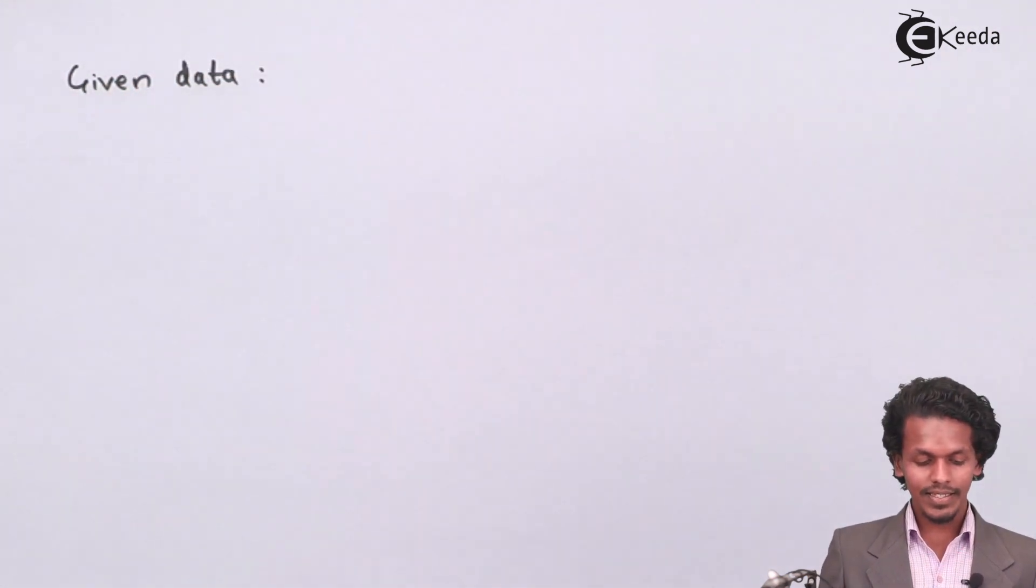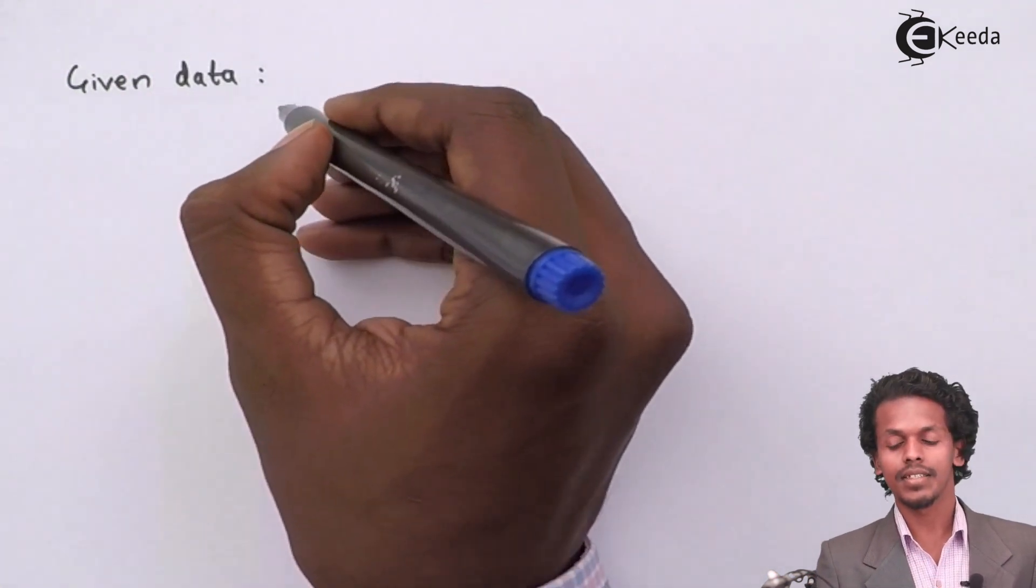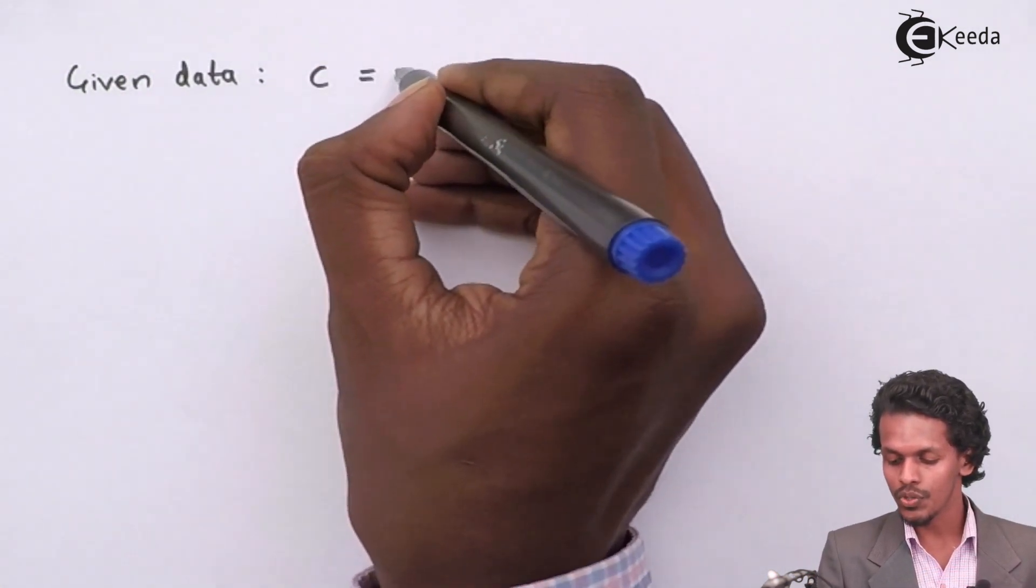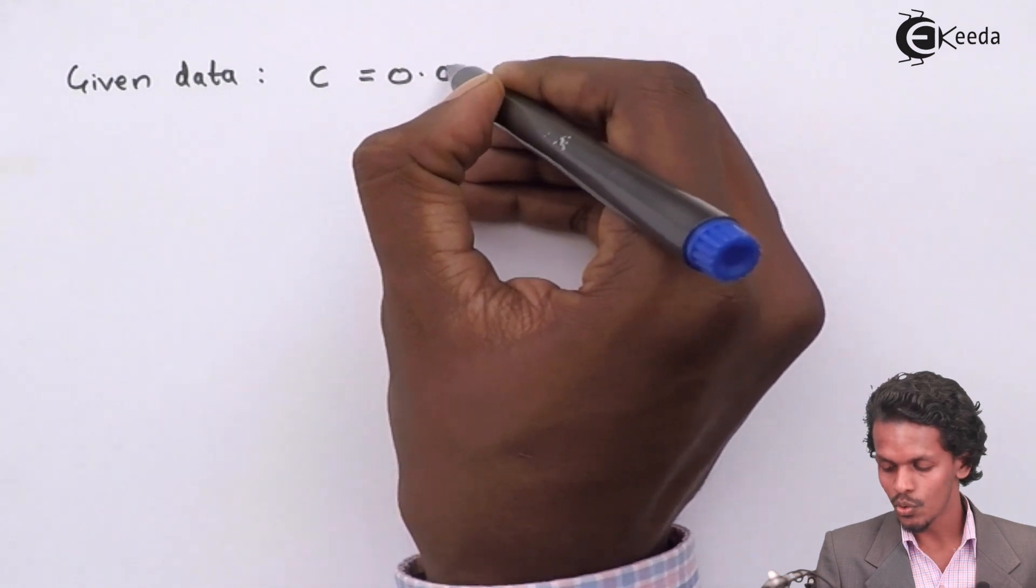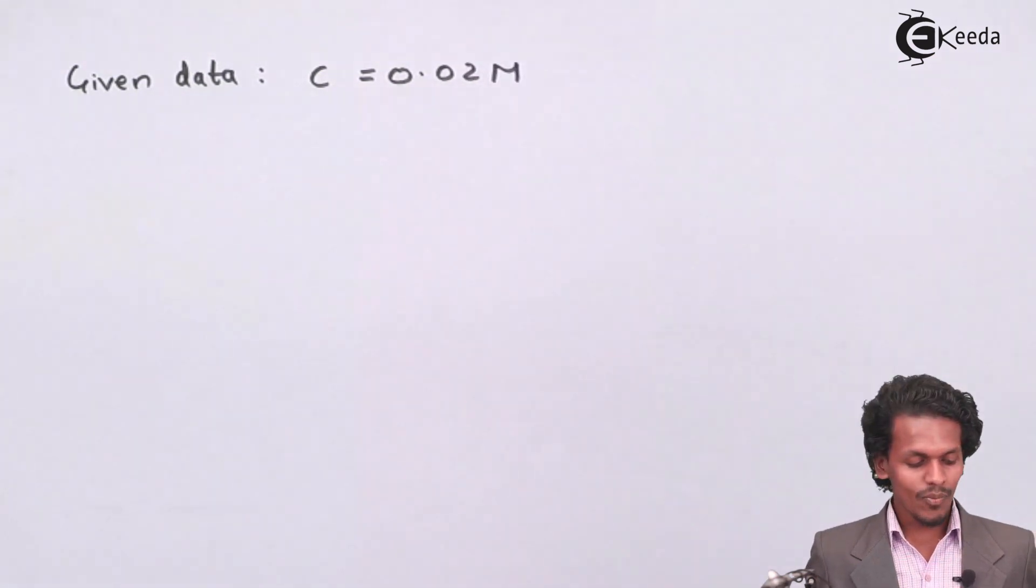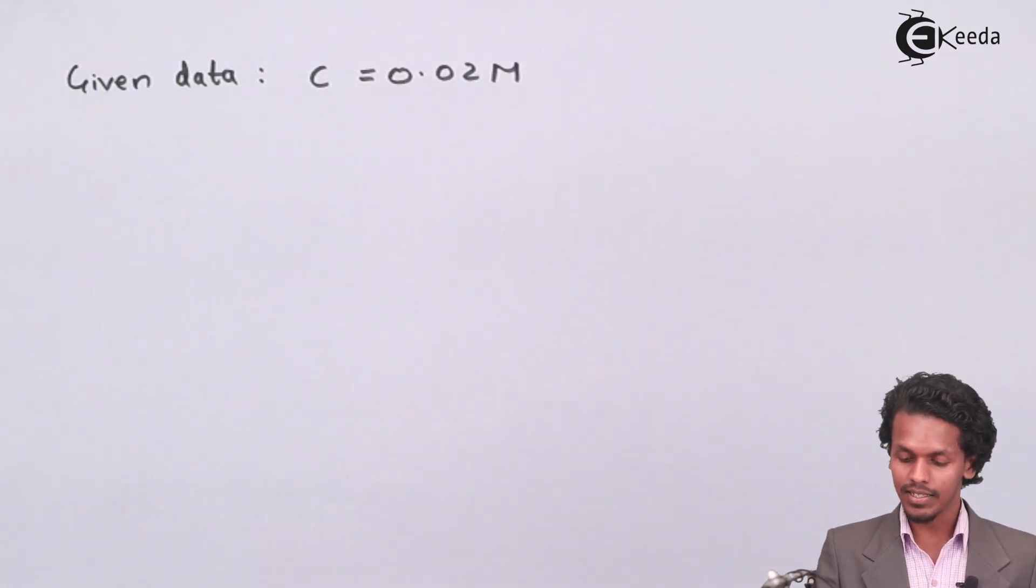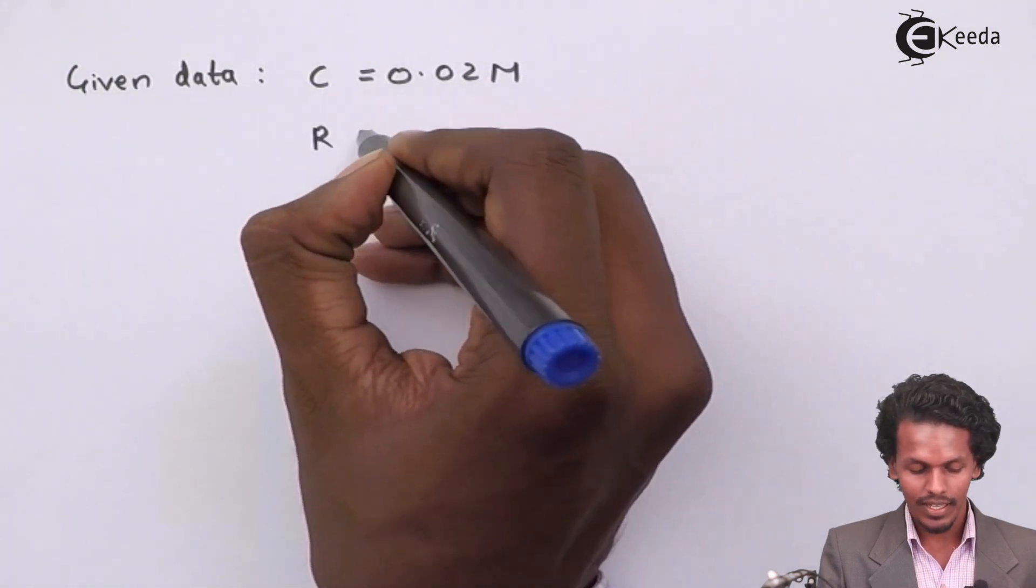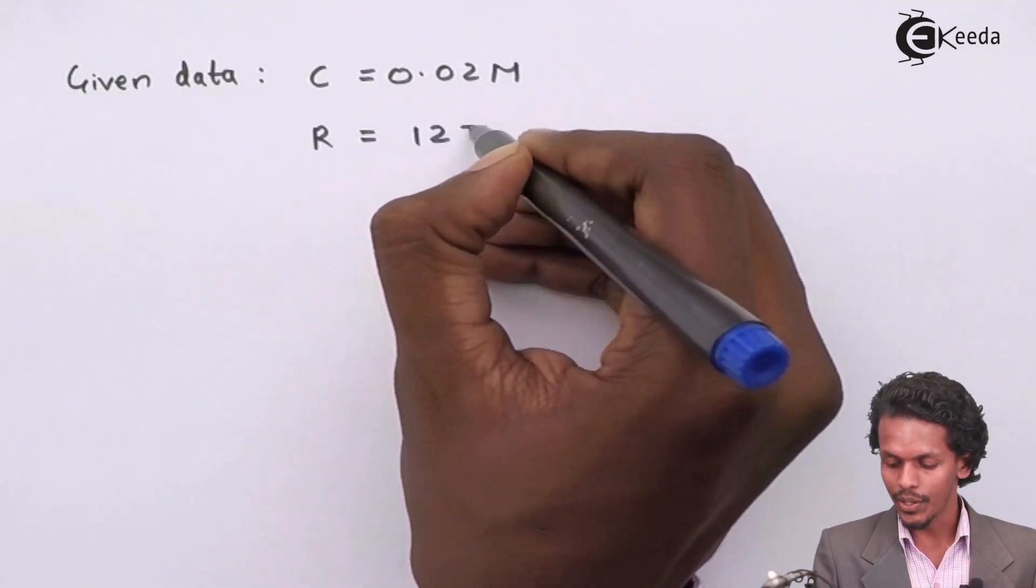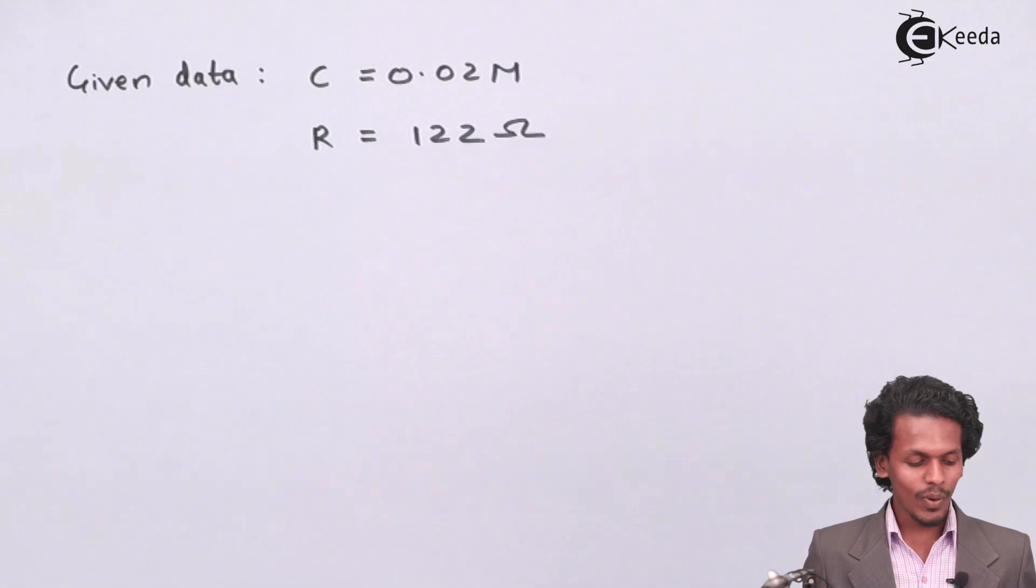So first of all, let us write the given data. The concentration C equals 0.02 molar, and the resistance R equals 122 ohms.